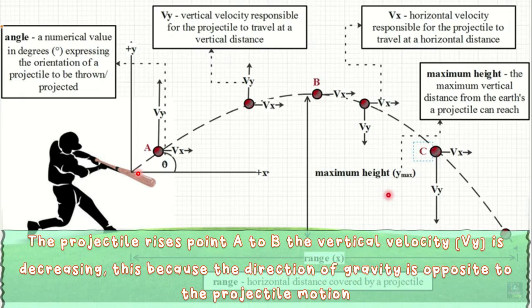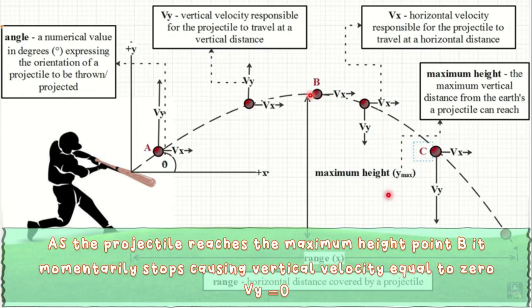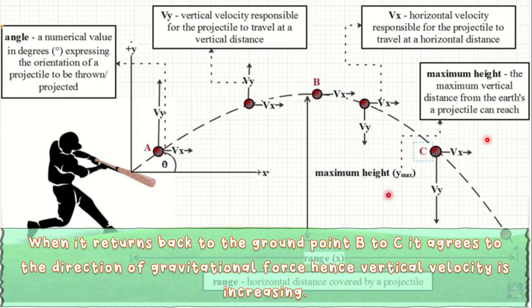As the projectile rises from point A to point B, the vertical velocity v sub y is decreasing, because the direction of gravity is opposite to the projectile's motion. As the projectile reaches the maximum height at point B, it momentarily stops, causing vertical velocity to equal 0. When it returns back to the ground from point B to point C, it agrees with the direction of gravitational force, hence the vertical velocity is increasing.